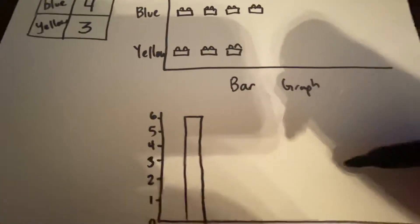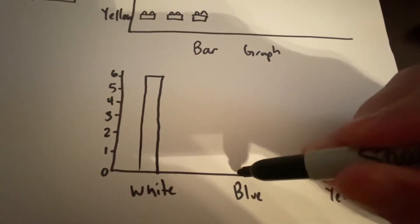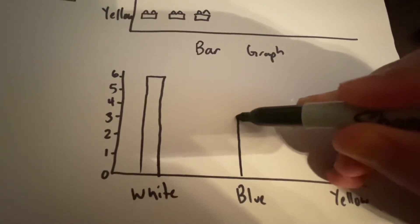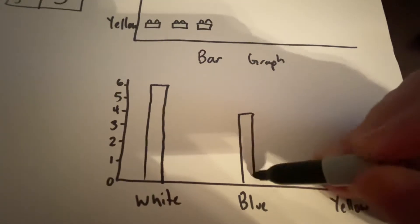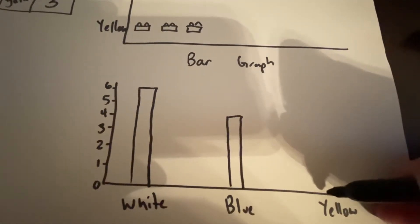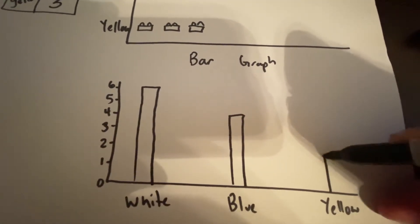to show that I have six white bricks. For blue, you remember there were four. So I want to go with the blue, go up to where the four is. And then with the yellow, this time only going up to three.